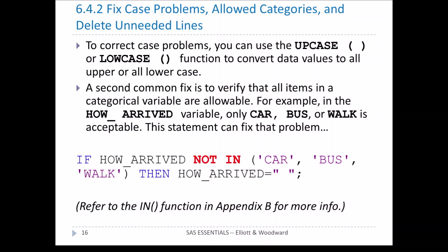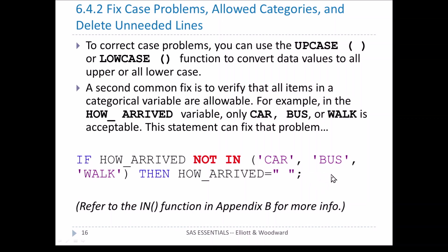A second common fix is to verify that all items in a category are allowed. For the 'how arrived' variable, only car, bus, or walk is acceptable. We can use an IF statement: if how_arrived NOT IN ('CAR', 'BUS', 'WALK'), then assign it a blank, because if someone didn't give an acceptable answer, we replace it with a blank since we don't know what the correct answer is.